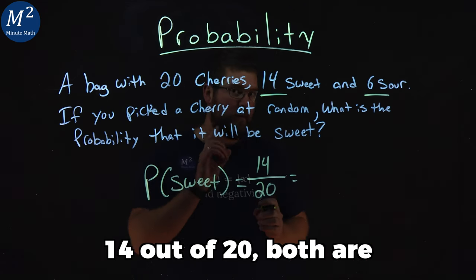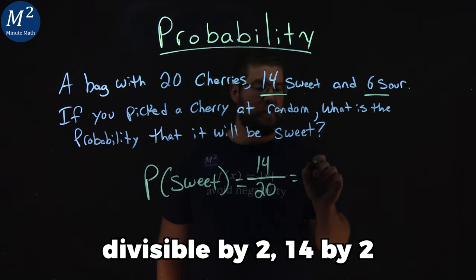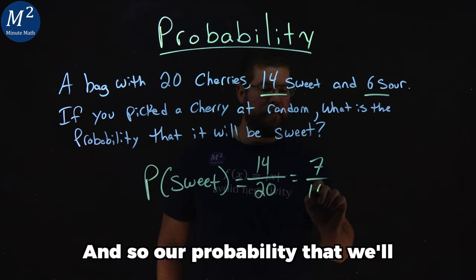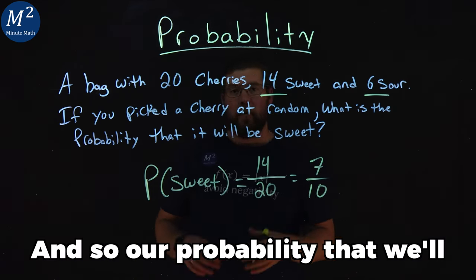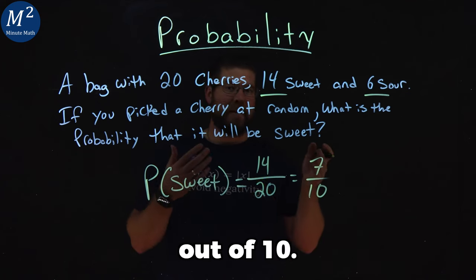14 out of 20—both are divisible by 2. 14 divided by 2 is 7, and 20 divided by 2 is 10. And so our probability that we'll get a sweet cherry is 7 out of 10.